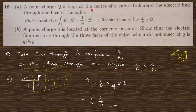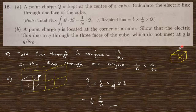Question 18: a point charge q is kept at the center of a cube. Calculate the electric flux through one face. By Gauss's theorem, the total flux is q/ε₀. By symmetry, the flux through each of the six faces is equal, so the flux through one face is q/(6ε₀).